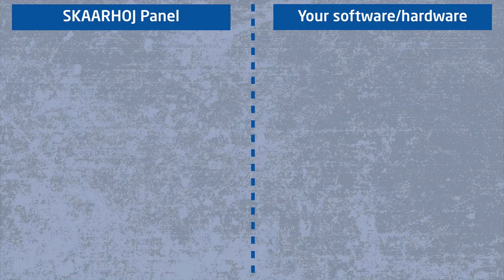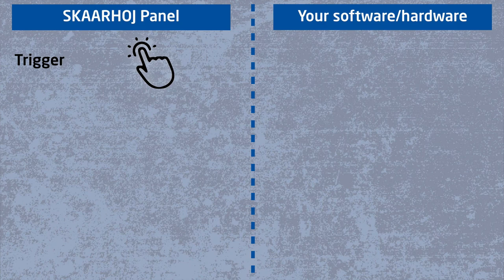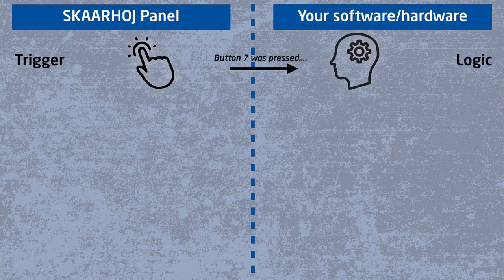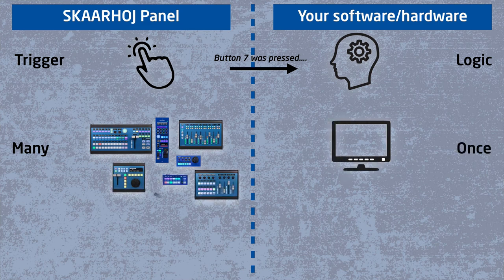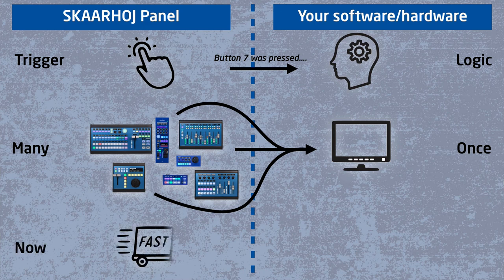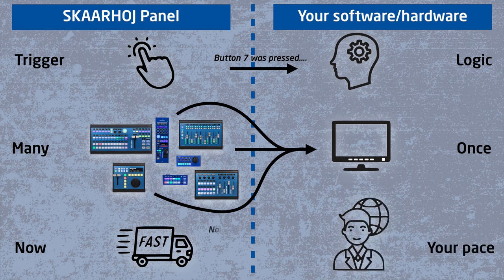There are at least three benefits to using RAW Panel Mode. First, you implement the business logic, and that means you are in control of the result. Secondly, you can easily implement any and all our panels, present and future — that is many more hardware options than you would ever want to offer yourself. Finally, you can get started right away. You just need a panel in your hand.